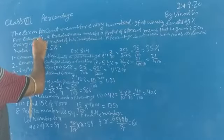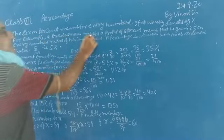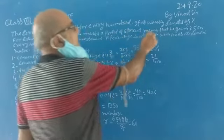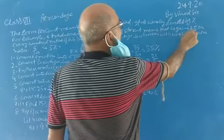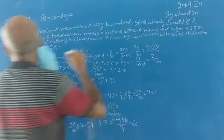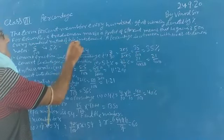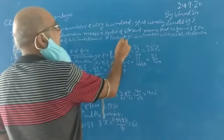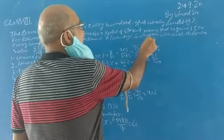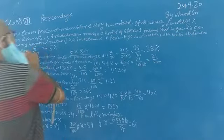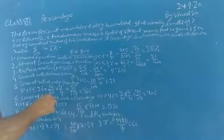For example, if someone gives five percent, that means for every hundred rupees of the investment. A percent is per hundred. Five by hundred is five percent.